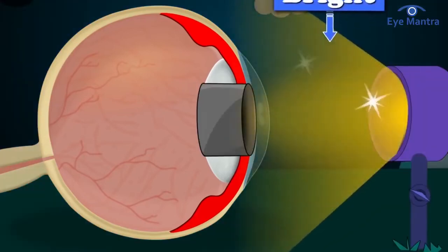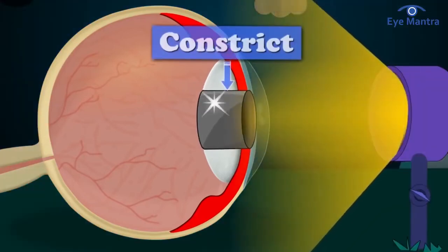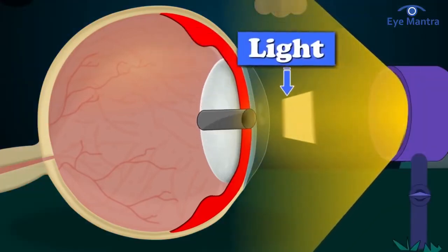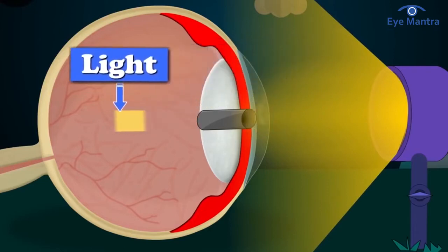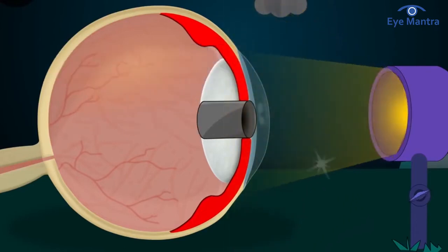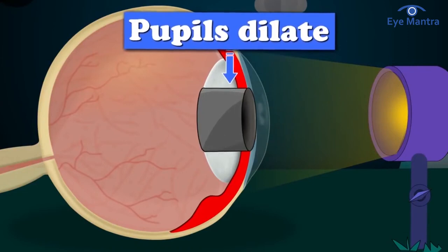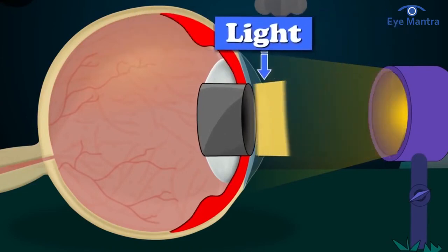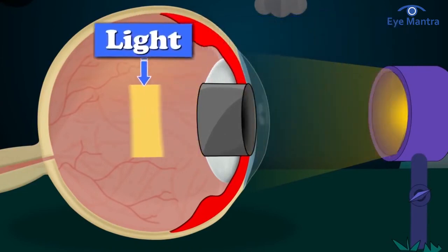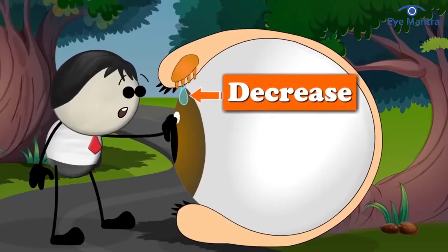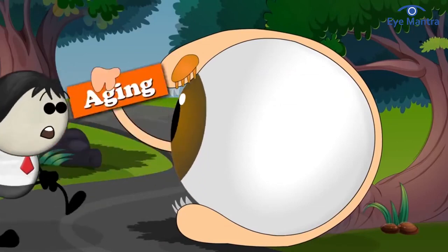In bright light, your pupil constricts — gets smaller — to prevent too much light from entering your eye. In dim lighting, your pupil dilates — gets larger — to allow more light in. Normal pupil size generally ranges from 2 to 4 millimeters in bright light and 4 to 8 millimeters in the dark. To some degree, pupil size tends to get smaller with age.